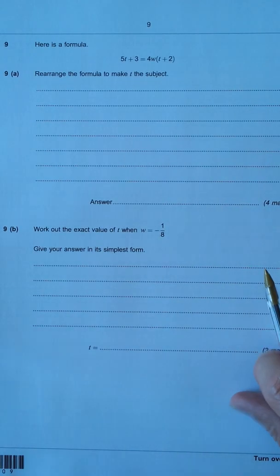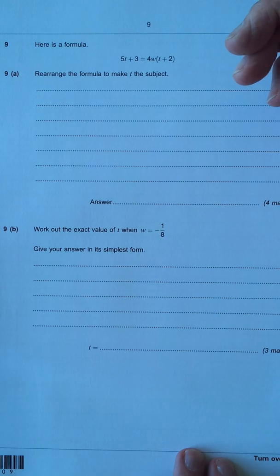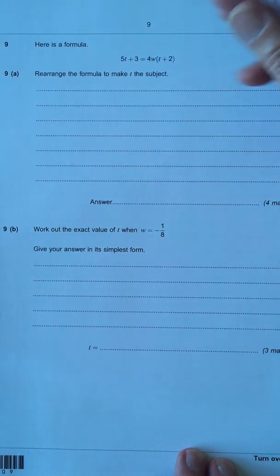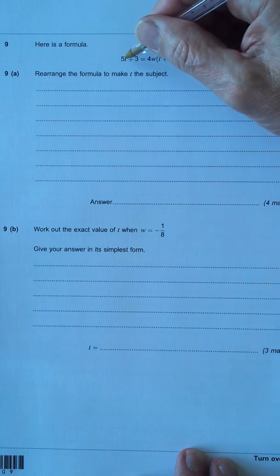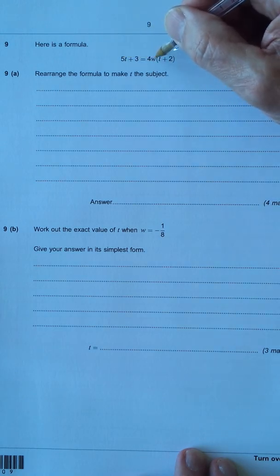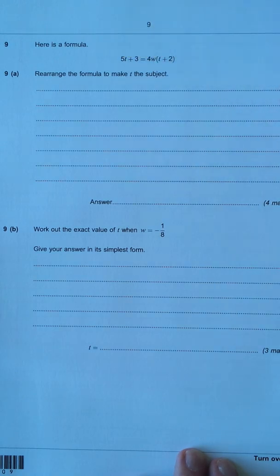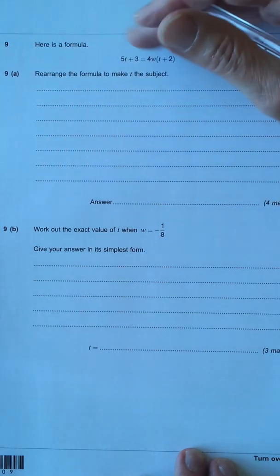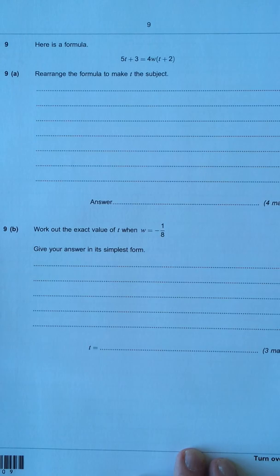Okay, question 9 is all about changing the subject of a formula and substitution. So let's have a look at this one. We've got 5t plus 3 equals 4w brackets t plus 2. Rearrange this to make t the subject. Most of these ones at this level you're going to have to factorize somewhere.